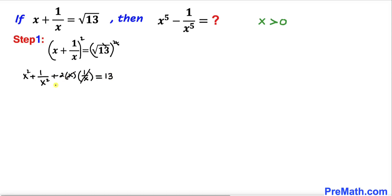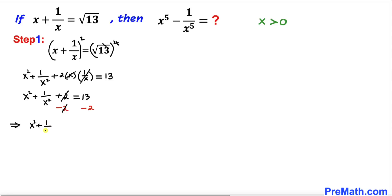We can see that x and 1 over x cancel each other out, so we end up with x² plus 1 divided by x² plus 2 equals 13. Subtracting 2 from both sides, therefore x² plus 1 divided by x² turns out to be equal to 11 on the right hand side. Let's call this equation number 1.